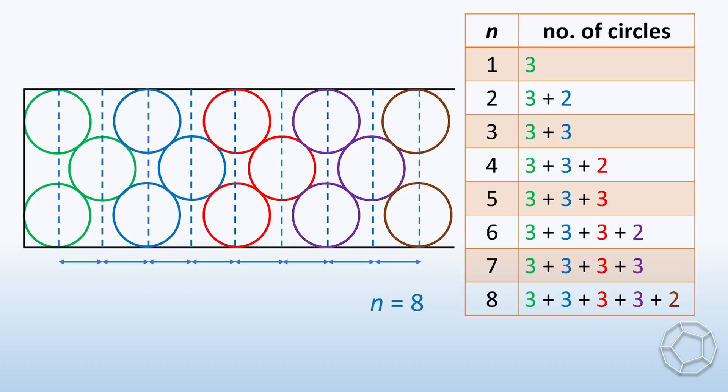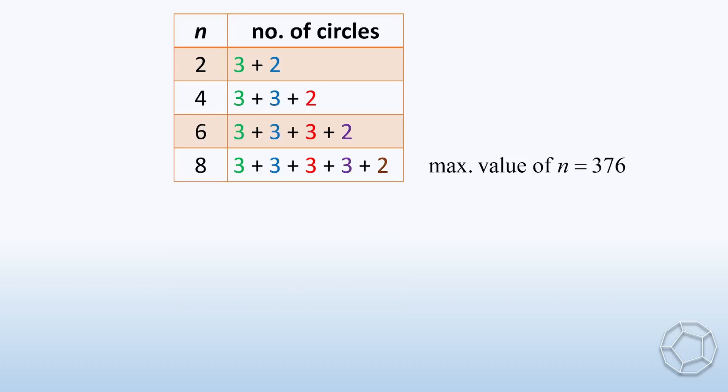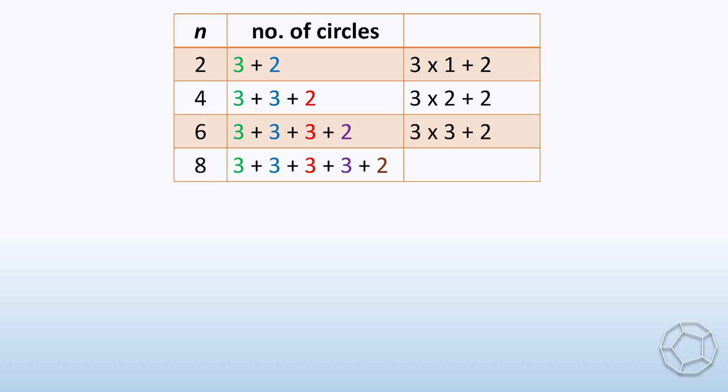Now, we have enough values to make some deductions. There are 2 different patterns for odd values of n and even values of n. Because we get the maximum value of n being 376, let's focus on the pattern of even values. They all start with multiple of 3, and then plus 2. The factors 1, 2, 3, and 4 right here are half the values of n.